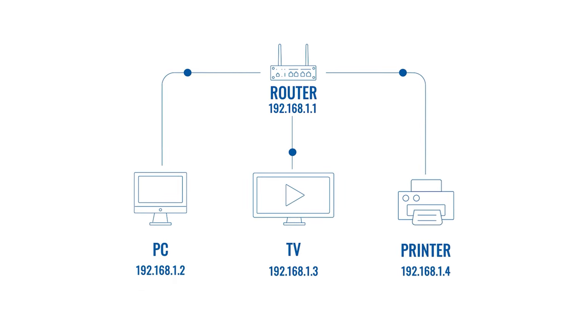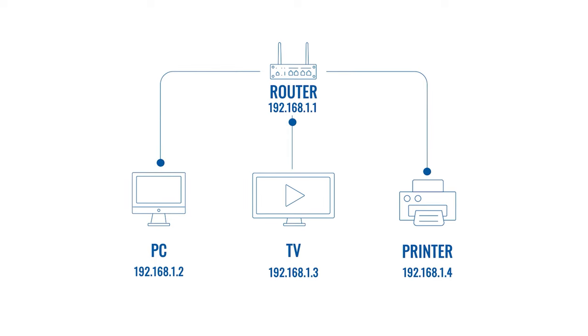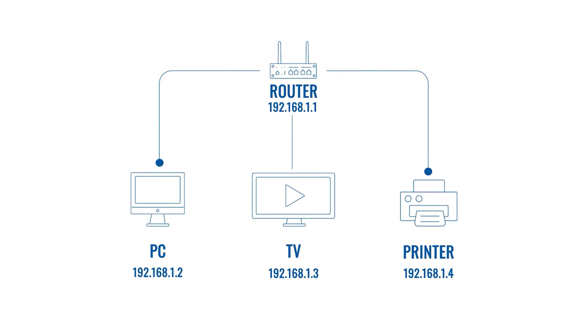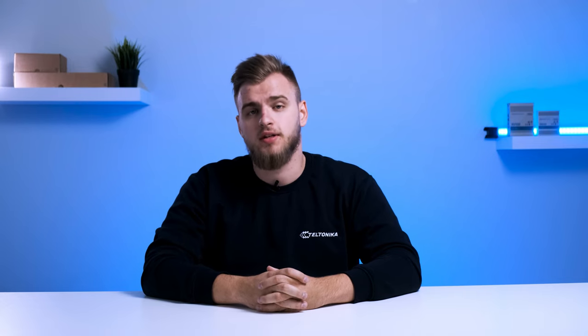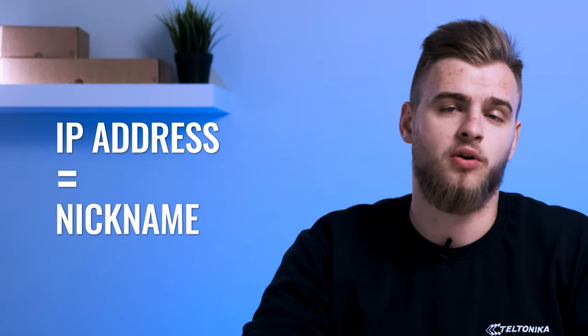Think of LAN as a small get-together of a friend group. The router creates a LAN network and becomes the host of a local area network party. It connects all party guests, like laptops, computers, or CCTV cameras, and creates private IP addresses for each of them, kind of like giving each of your friends their own nickname. Each router creates its own party with its own guests and nicknames.